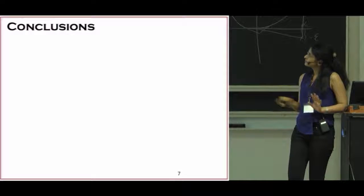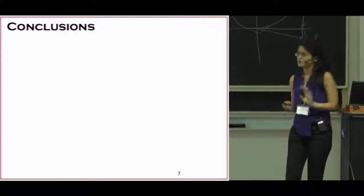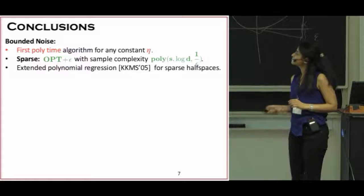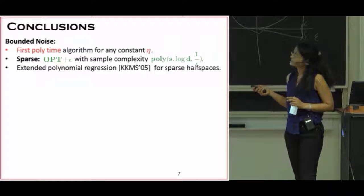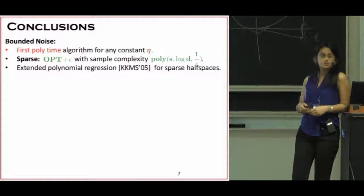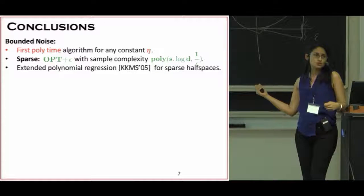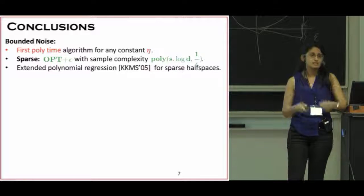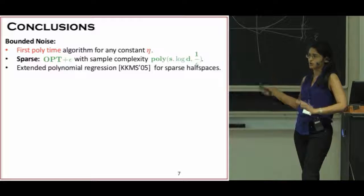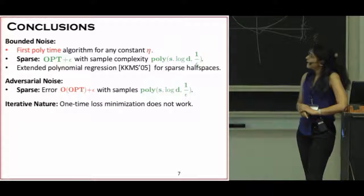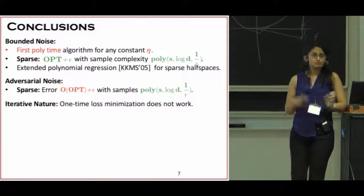I want to conclude by summarizing what I said. For bounded noise, we showed that you can achieve opt plus epsilon for any value of noise eta, and you can do it in a one-bit compressed sensing fashion. To get this result, we extend the polynomial regression of KKMS for sparse half-spaces. For adversarial noise, we show a similar result, but this time a multiplicative approximation.